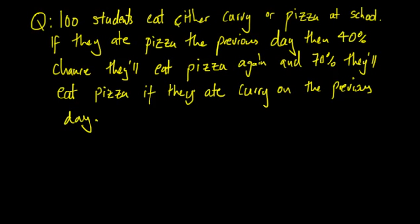We need to derive two equations, so we'll start off with pizza. Pizza is equal to 0.4p plus 0.7c. How I got that is, for every student that eats pizza, 40% of those who eat pizza will eat pizza again, that's why it's 0.4p.